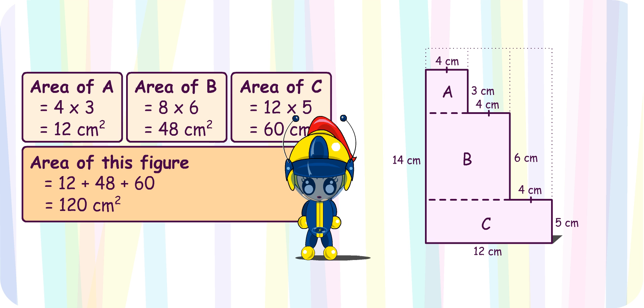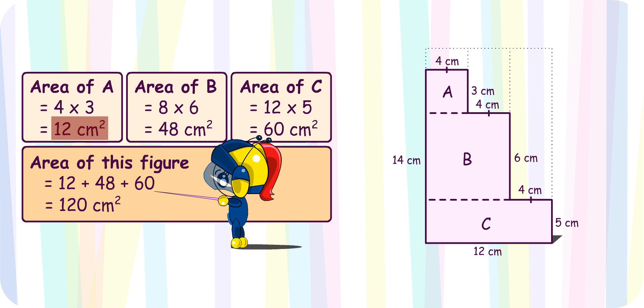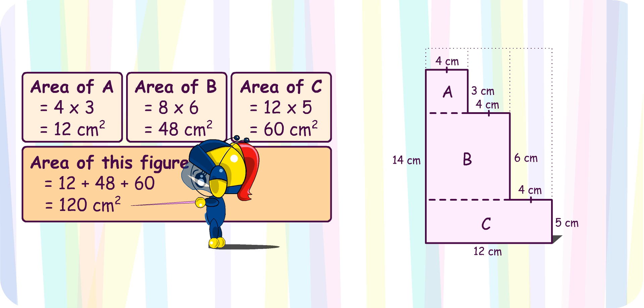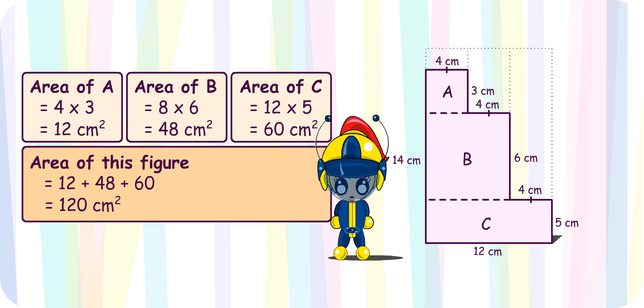So, the area of the figure is 12 cm² plus 48 cm² plus 60 cm², which is equal to 120 cm². Well done, Turbo Girl!